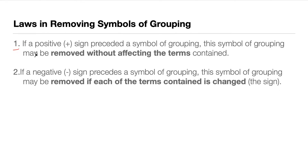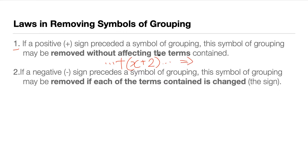For the first law: if a positive sign precedes a symbol of grouping, the symbol of grouping may be removed without affecting the terms contained. One specific example is: if we have a plus quantity (x plus 2), this can become just plus x plus 2 and so on. We simply delete the parentheses — we've taken care of them without changing anything.